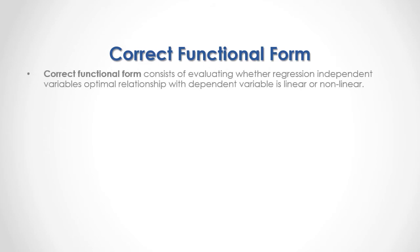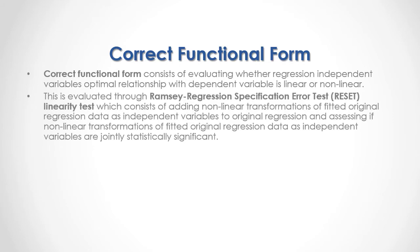Correct functional form consists of evaluating whether the regression independent variables' optimal relationship with the dependent variable is linear or non-linear. This is evaluated through the Ramsey Regression Specification Error Test, or Reset Linearity Test, which consists of adding non-linear transformations of fitted original regression data as independent variables to the original regression and assessing if those non-linear transformations are jointly statistically significant.